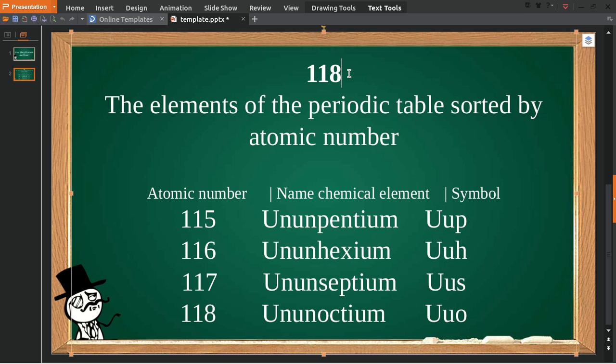This is a list of the last four elements, the last ones discovered in the periodic table: Ununoctium, Ununseptium, Ununhexium, and Ununpentium. That's all for me.